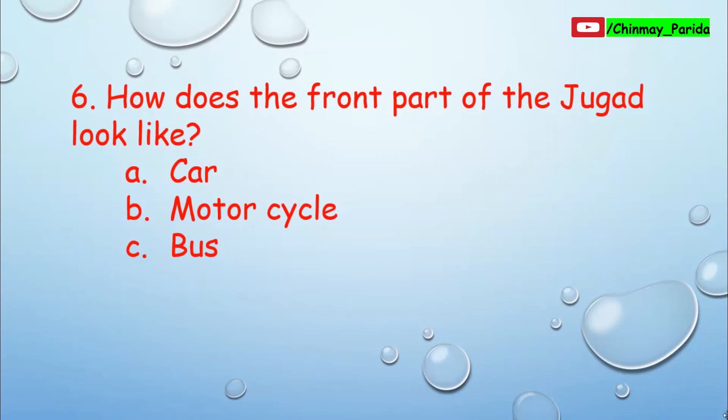Question number 6. How does the front part of the Jugaad look like? Jugaad is a type of vehicle usually used in the states of Gujarat and Rajasthan. Option A: car, option B: motorcycle, option C: bus. The front part of the Jugaad is made of a motorcycle, so it looks like a motorcycle from the front. The correct answer is option B, motorcycle.